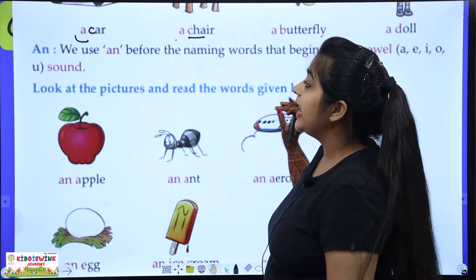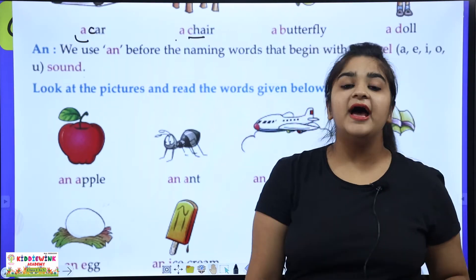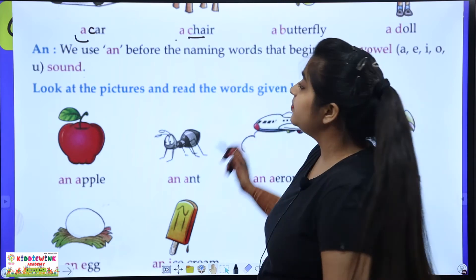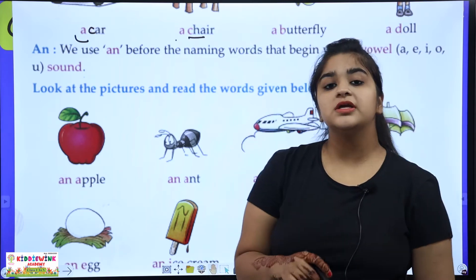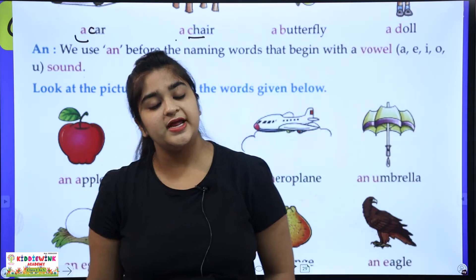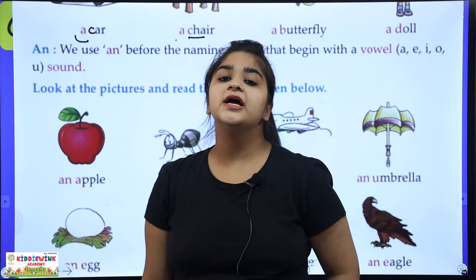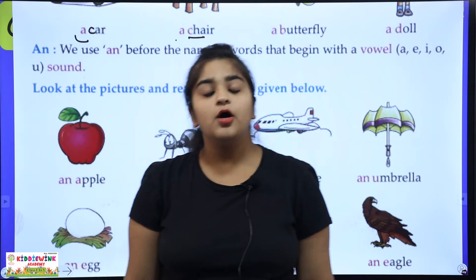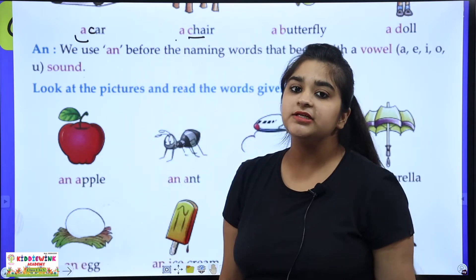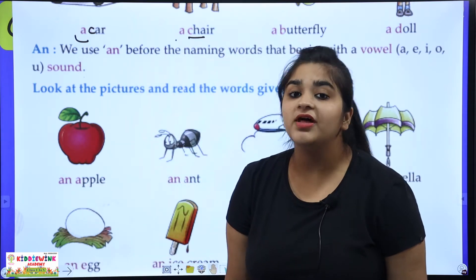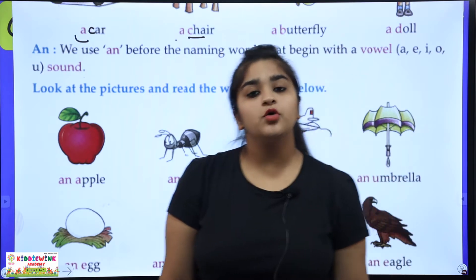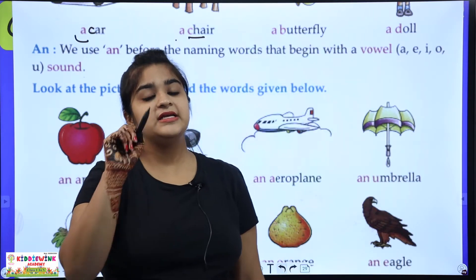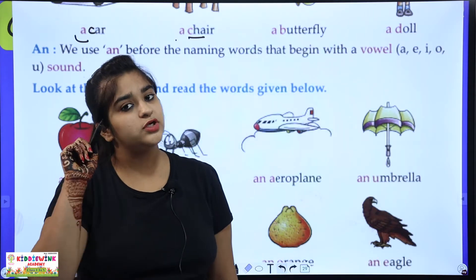Next comes AN. AN is used before any word that starts from a vowel — A, E, I, O, U. Whatever word starts with these vowels, we use AN before it.